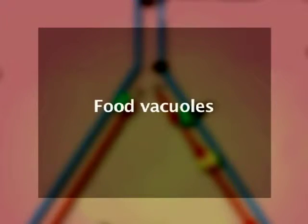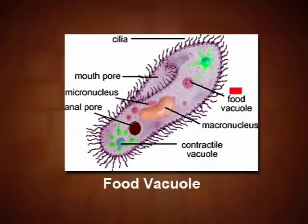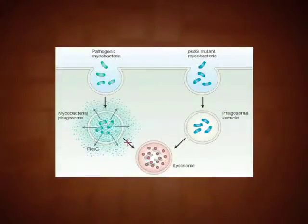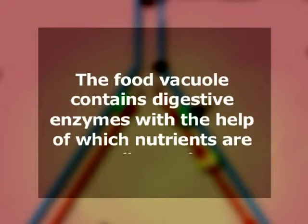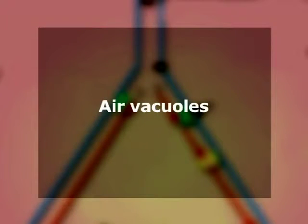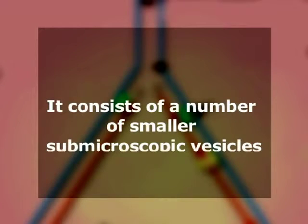Type 3 - Food vacuoles: They occur in the cells of protozoan protists, several lower animals, and phagocytes of higher animals. A food vacuole is formed by fusion of a phagosome and a lysosome. The food vacuole contains digestive enzymes with the help of which nutrients are digested, and the digested material passes out into the surrounding cytoplasm. Type 4 - Air vacuoles: Also called pseudo-vacuoles or gas vacuoles, reported only in prokaryotes. An air vacuole is not a single entity, nor surrounded by a common membrane. It consists of a number of smaller sub-microscopic vesicles, each surrounded by a protein membrane enclosing metabolic gases.